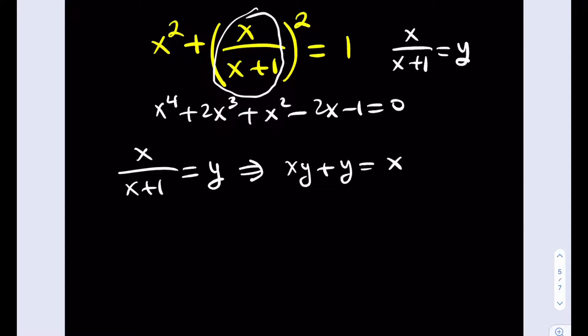I can just subtract y from both sides, and this is going to give me x minus y being equal to xy. This is one of the things that I'm getting. This is one of my equations.